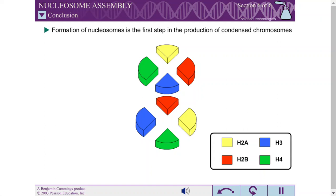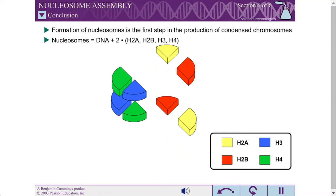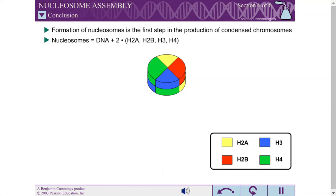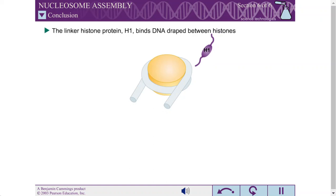The nucleosome consists of double-stranded DNA wrapped around eight histone core proteins, two each of H2A, H2B, H3, and H4. The DNA is positioned around the histone core by the N-terminal tails of the individual histones. A linker histone protein, called H1, binds DNA draped between histones.